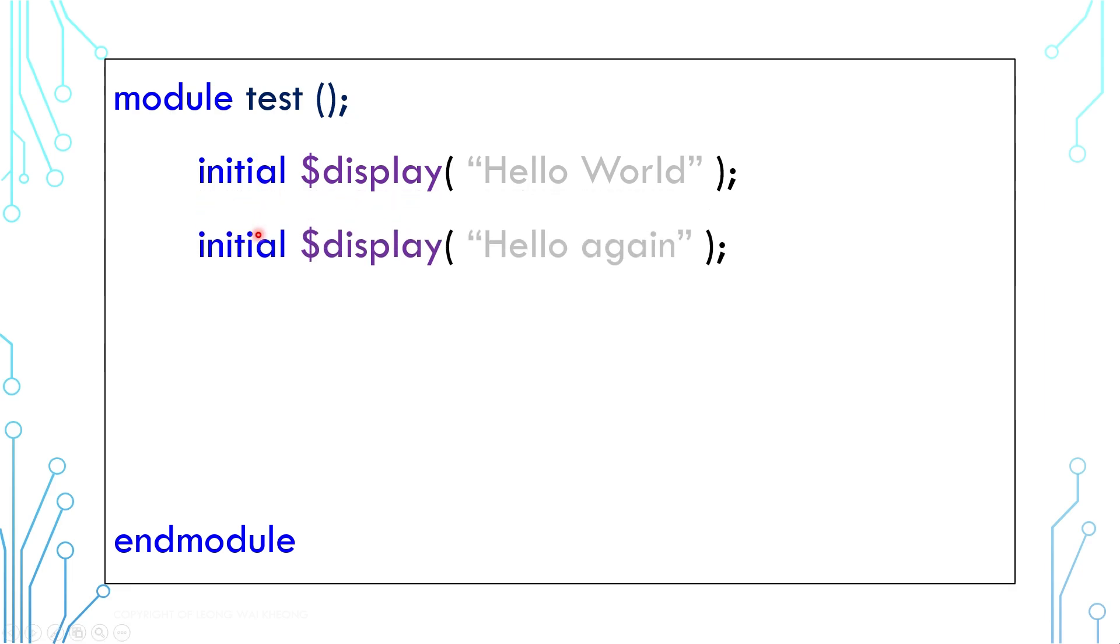You can use multiple initial blocks to start different execution. Every initial block runs in parallel. In terms of order, there is no way to tell which one happens first. In this example, Hello Again may be printed first instead of Hello World. But in terms of timing, both happen at time zero.